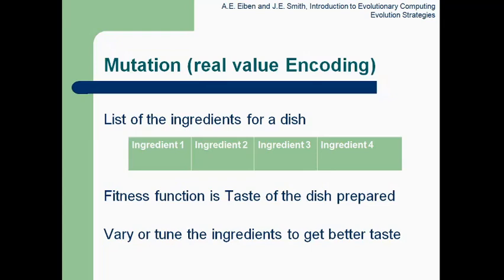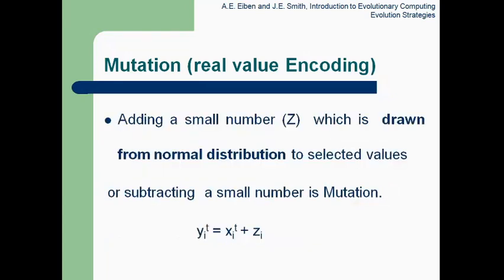Here is one example of why we should go for mutation. Here is a chromosome showing the ingredients for a particular dish — ingredients one, two, three, and four are there. The fitness function for this chromosome is the taste of the dish prepared. By mutation, we will vary or tune the ingredients to get a better taste — we may increase some ingredient or decrease some ingredient.